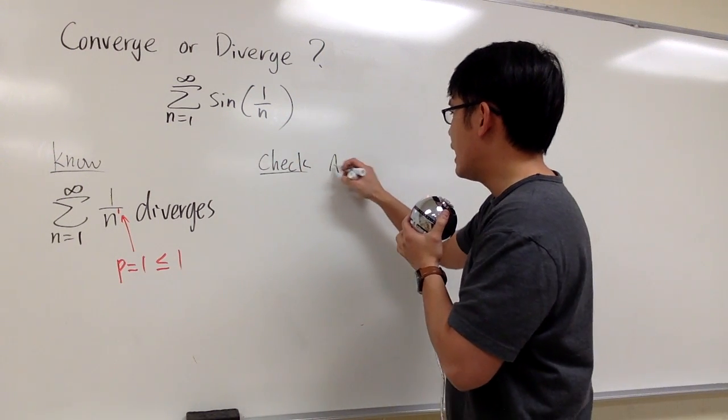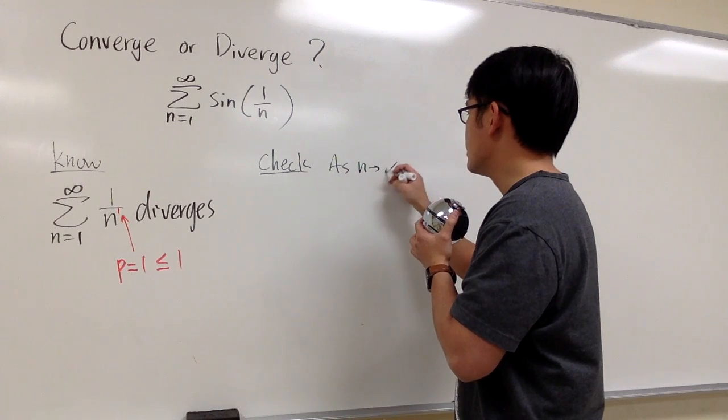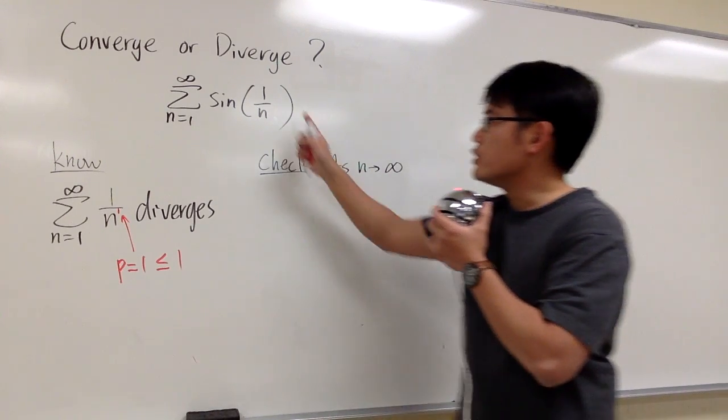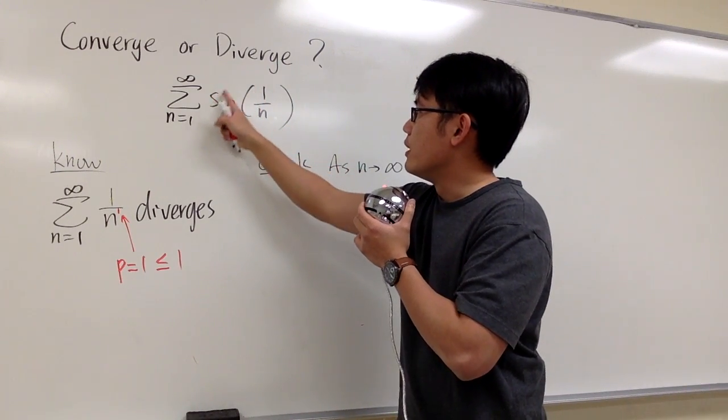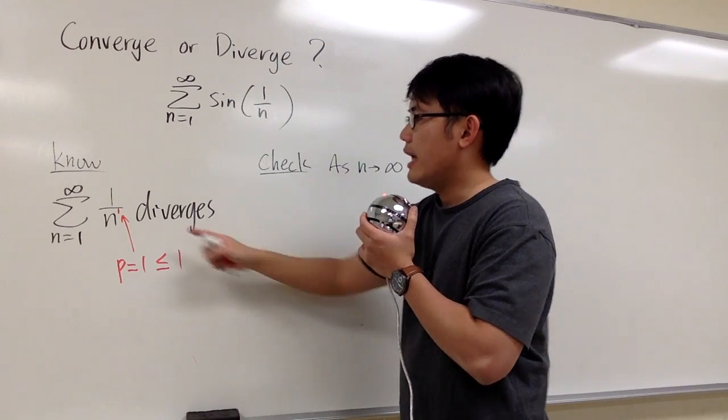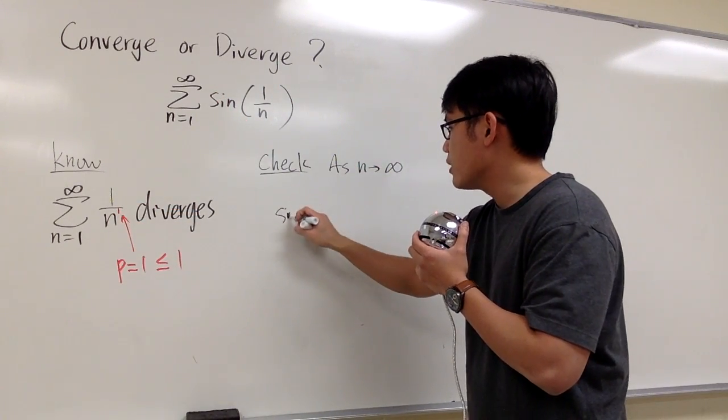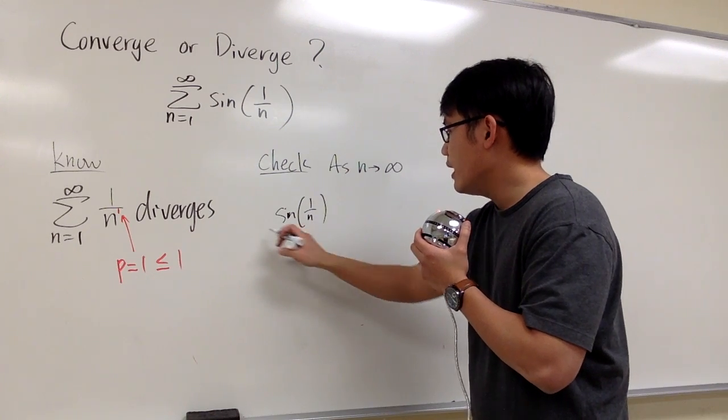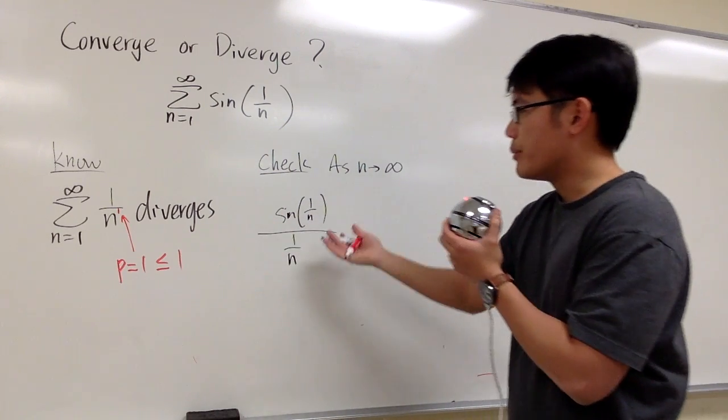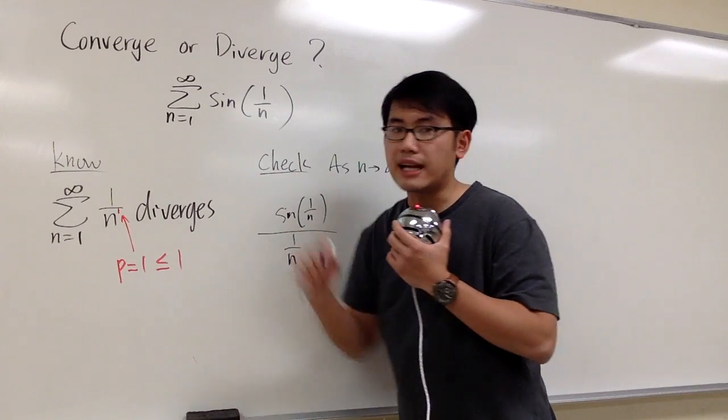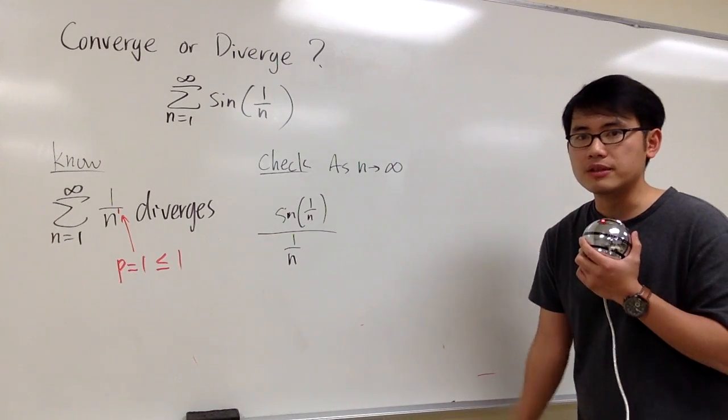And I will say, as n goes to infinity, and what we do is, we just write down the ratio of sine of 1 over n and 1 over n, which is just sine of 1 over n over 1 over n. We're pretty much comparing the ratio of this right here and that. That's the limit comparison test.